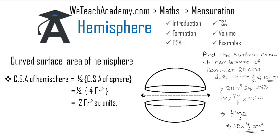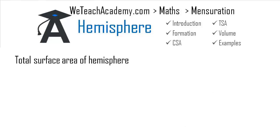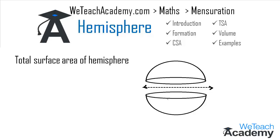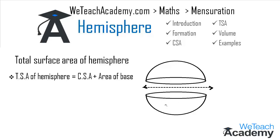Coming to the next section, we will deal with the total surface area of a hemisphere. Total surface area includes the area of the curved surface plus the area of the base. The curved surface area is 2πr² and the area of the base is πr². Adding both: 2πr² + πr² = 3πr² square units.